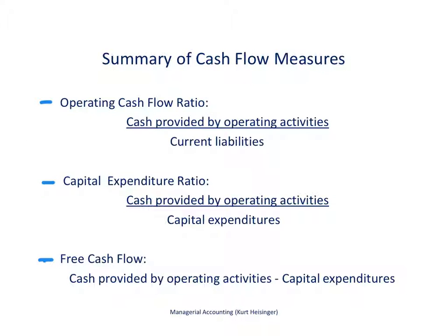This slide summarizes the three cash flow measures. First, the operating cash flow ratio: cash provided by operating activities from the statement of cash flows, divided by current liabilities from the balance sheet. Second, the capital expenditure ratio: cash provided by operating activities divided by capital expenditures, found in the investing activity section of the statement of cash flows. Third, free cash flow: cash provided by operating activities minus capital expenditures, showing how much cash remains after covering investments in long-term assets.